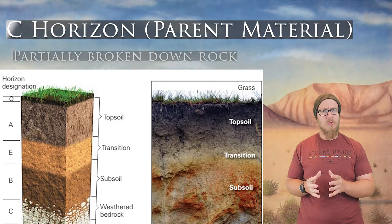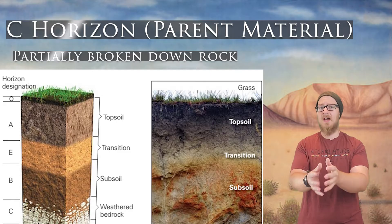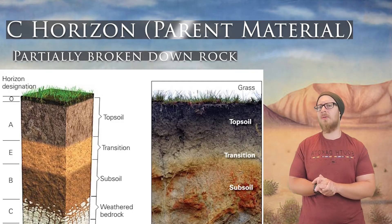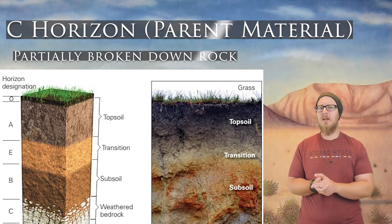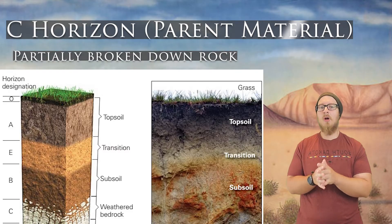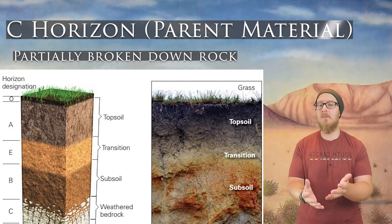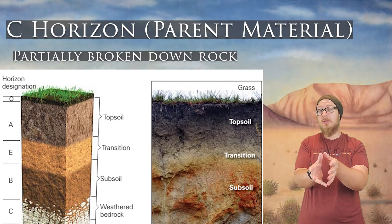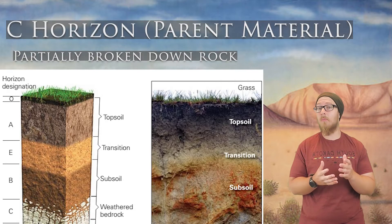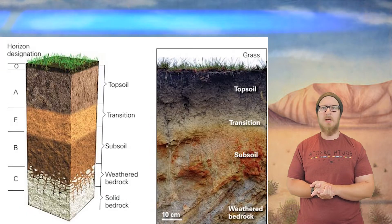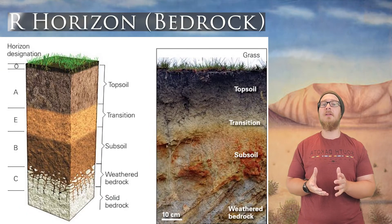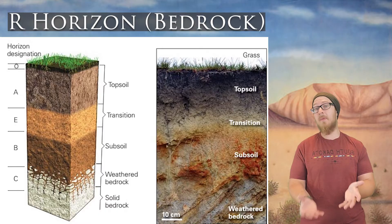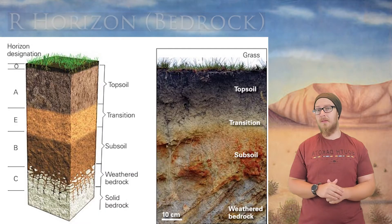Below that is the C horizon, where we see partially weathered rock. These smaller rocks are called parent material, as they were once weathered to make the mineral portion of the soil. And finally, the R horizon, which is the solid bedrock way underneath.